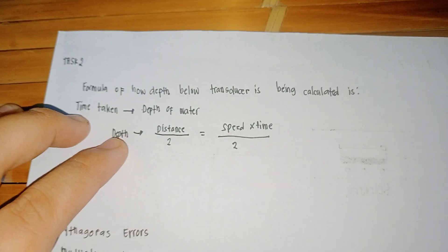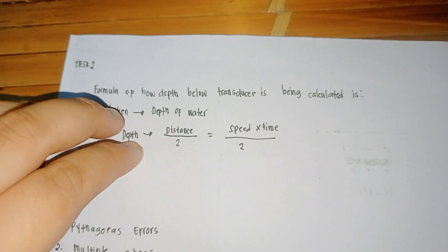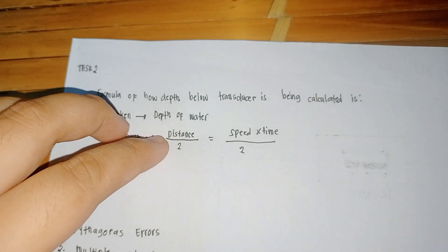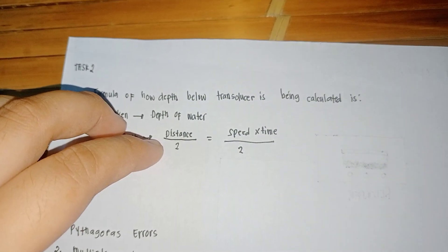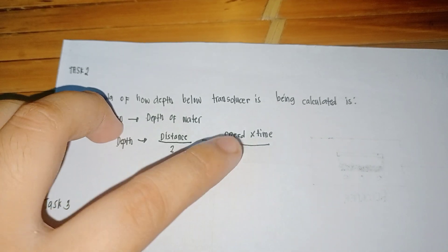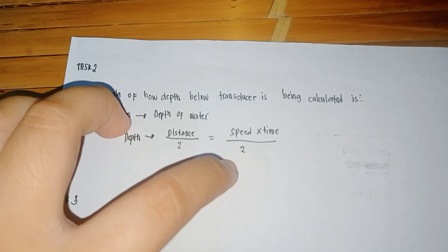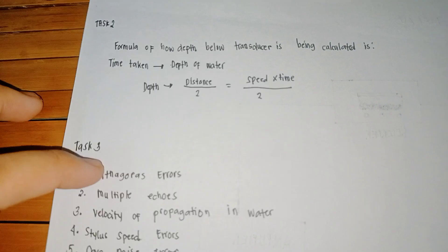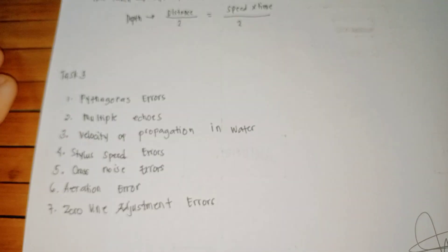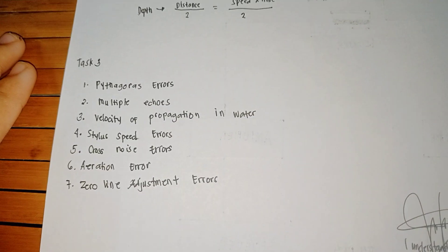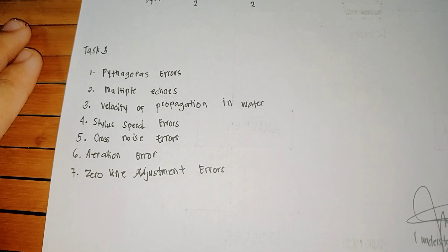We have time taken to depth of water. Depth equals distance over 2, which equals speed times time over 2. For Task 3, we have to explain the seven identified errors of the echo sounder.